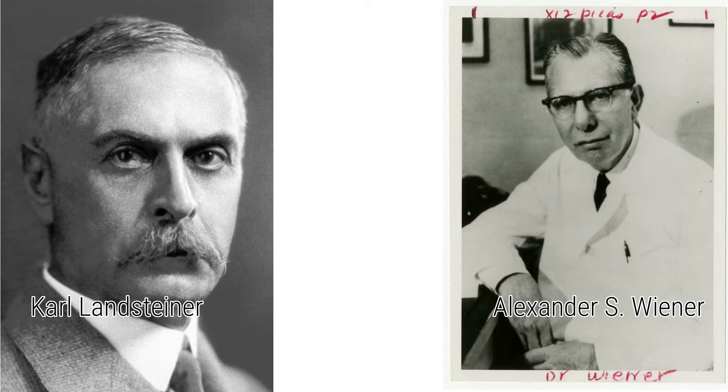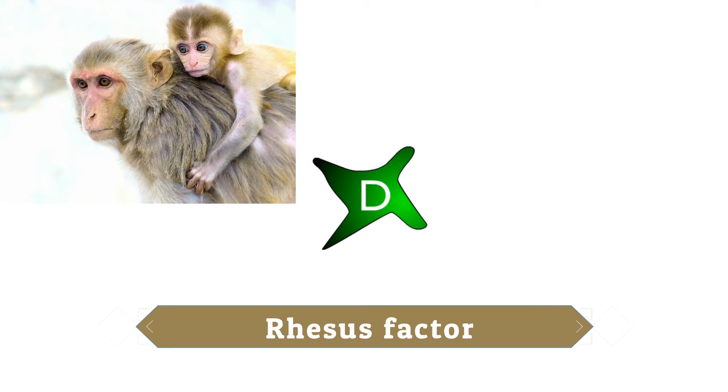After 36 years of the discovery of the ABO blood grouping system, Karl Landsteiner and Alexander S. Wiener in 1937 discovered another type of antigen on the RBC. It was called antigen D, which has some similarities with the antigen found in rhesus monkeys' blood cells. Hence, the term rhesus factor was born, and ultimately the blood grouping system was named the Rh blood grouping system.